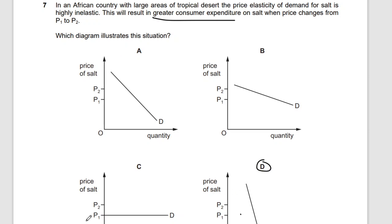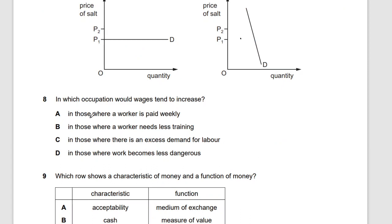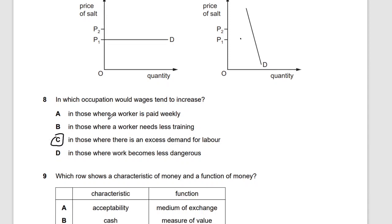Question eight: in which occupation would wages tend to increase? Not those where workers are paid weekly, not those where workers need less training — more training leads to more wages. The answer is those where there is excess demand for labor. Wages tend to increase in cases of excess demand for labor.